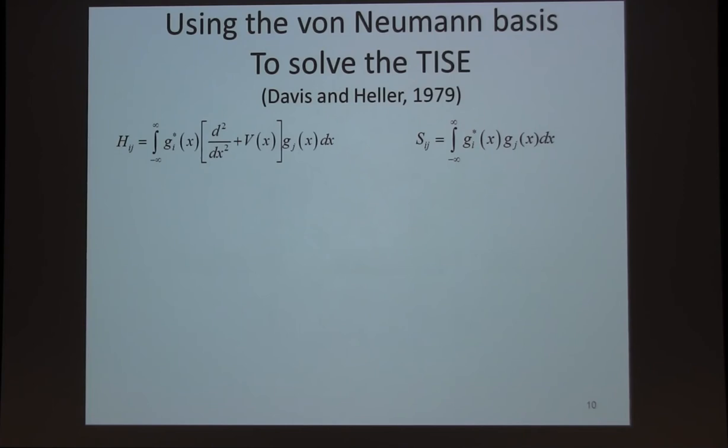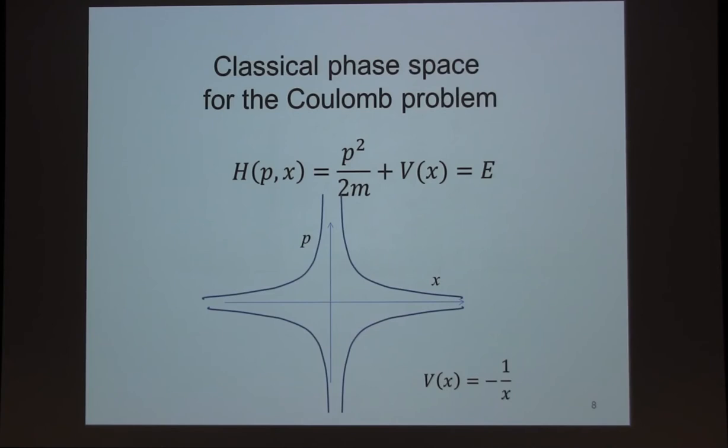Now, in 1979, Davis and Heller had the following idea. They said, if I think about the classical structure, there's a correspondence principle between classical and quantum mechanics. If I think about this underlying classical structure, if I'm interested in solving the time-independent Schrödinger equation to get the eigenstates up to energy E, then I shouldn't need to put Gaussians out here where the energy is much higher. I should only need to put my Gaussian basis functions where they're needed based on the classical mechanics. Therefore I can save all of this putting the basis functions in all of these areas. So that was their idea.